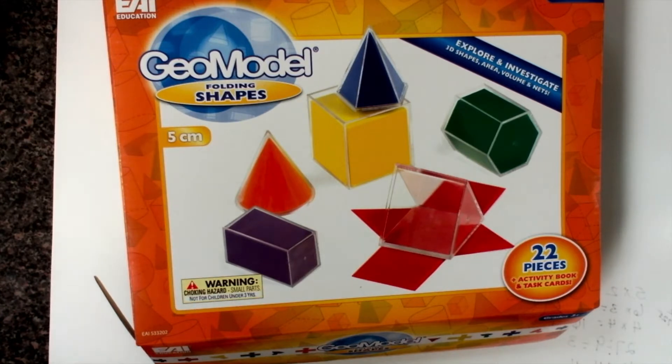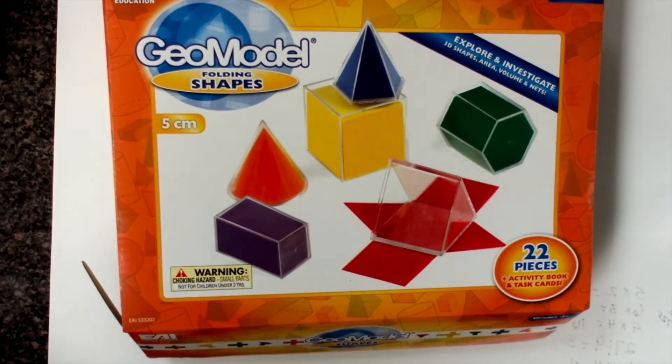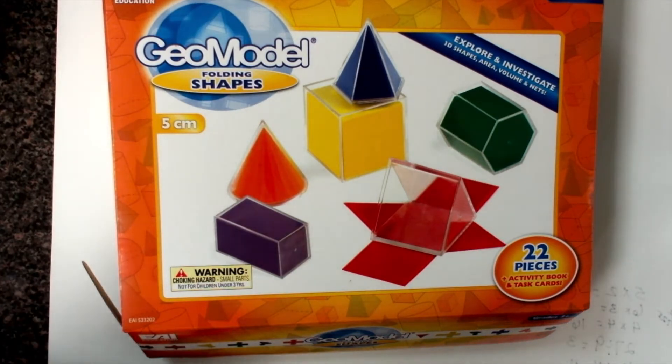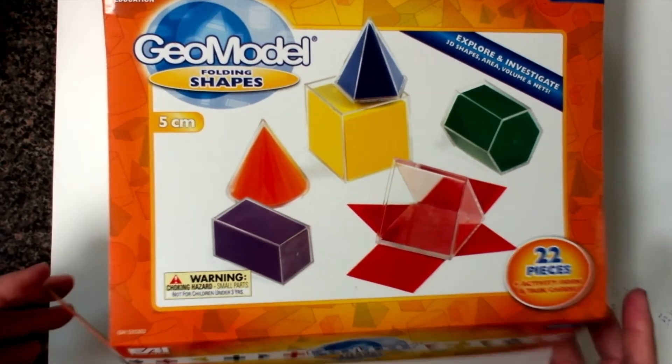Many of you may have this kit, the Geomodel folding shapes. I love this kit for many different reasons. If you have this kit, it's basically for talking about 3D shapes, surface area, volume, and nets. There's 22 pieces in the kit.